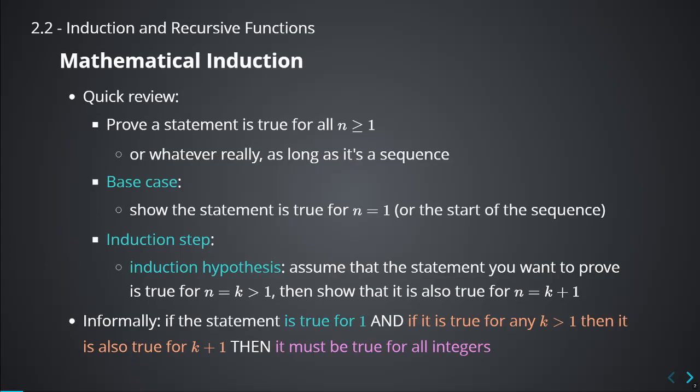Then you show that if it's true for k, then it's also true for k plus 1. By doing so, if you can show the statement is true for 1, and also show that if it's true for k then it's true for k plus 1, then you've shown it's true for 1, then 2, then 3, then 4, and so on for all positive values of n. That's what induction is.